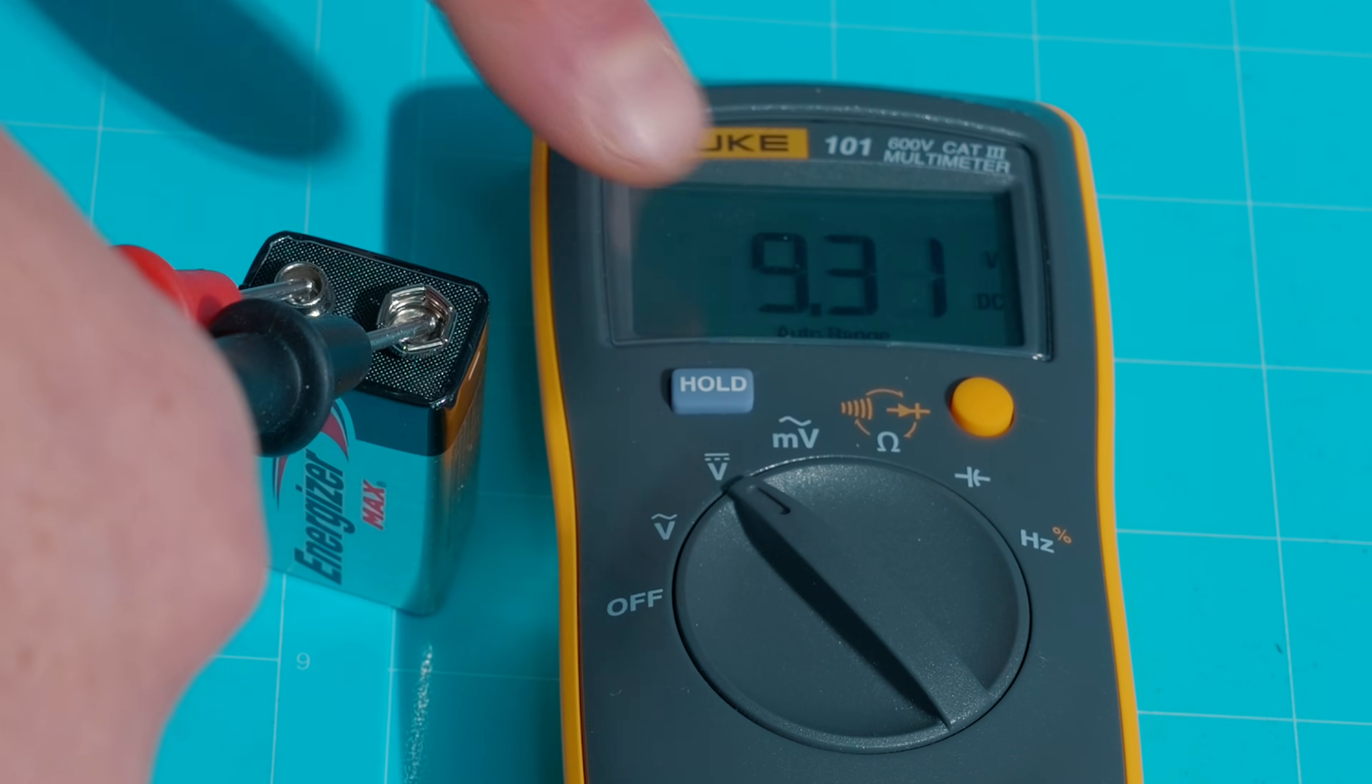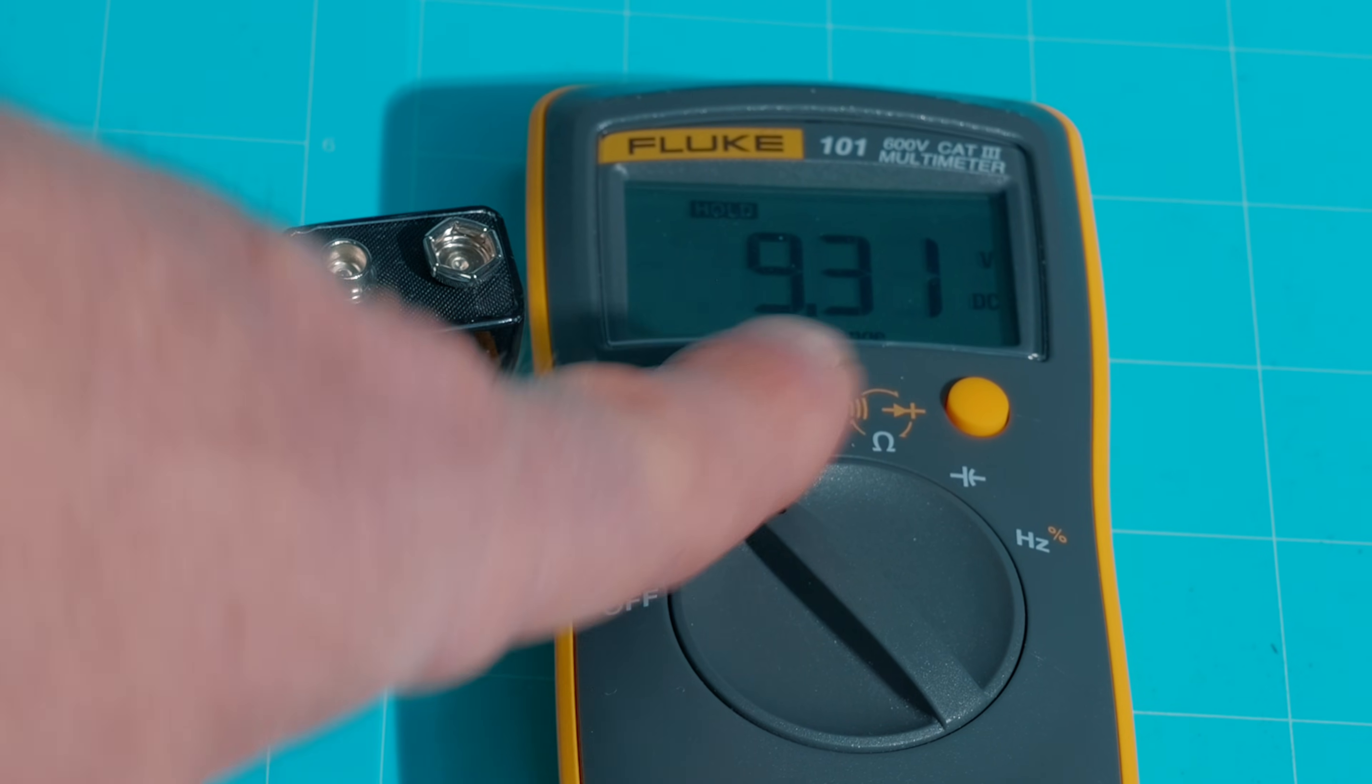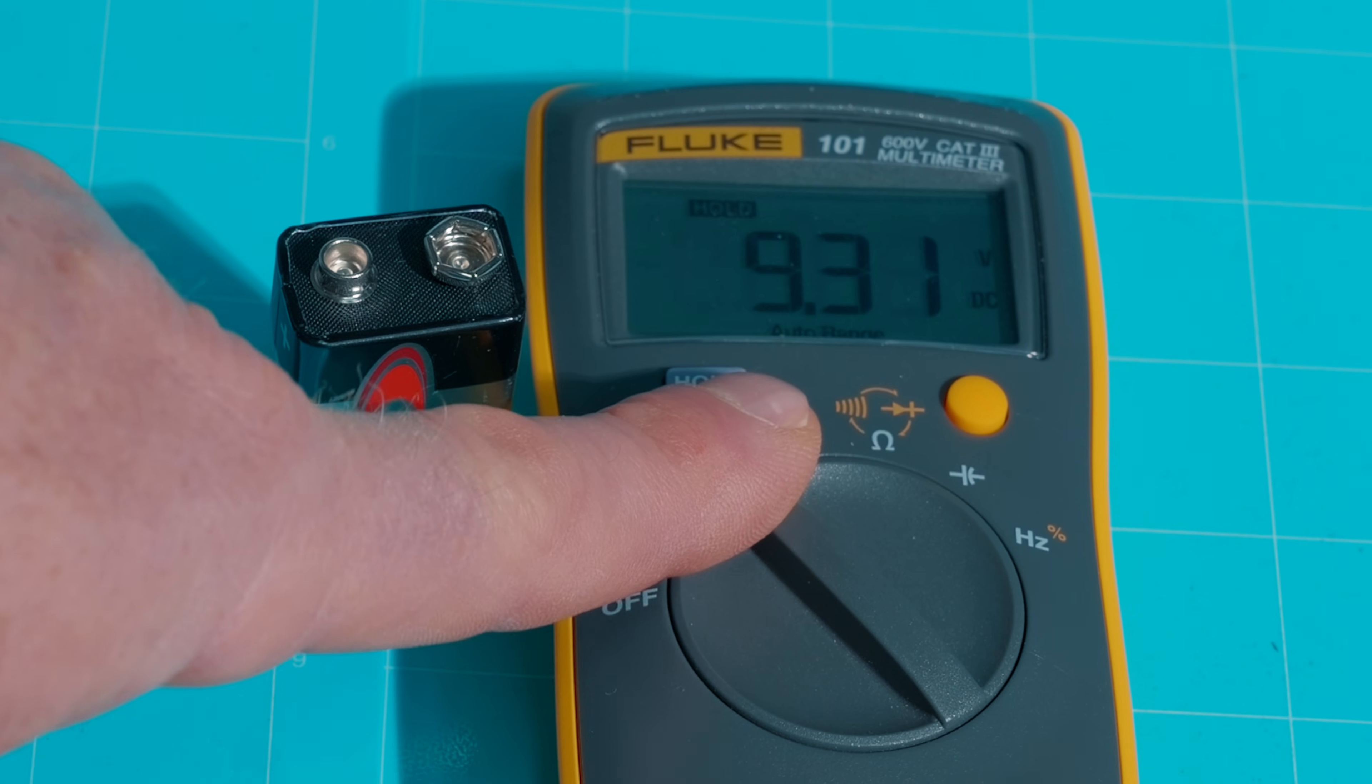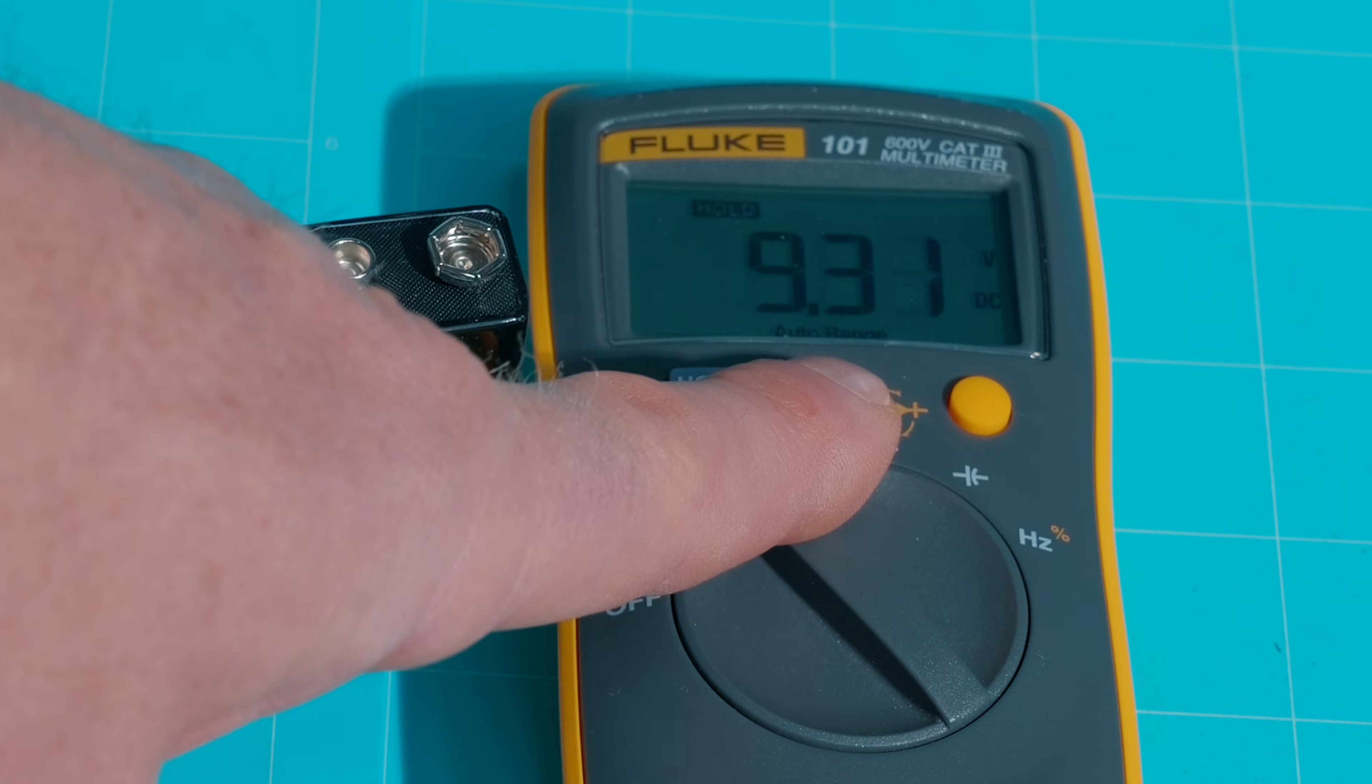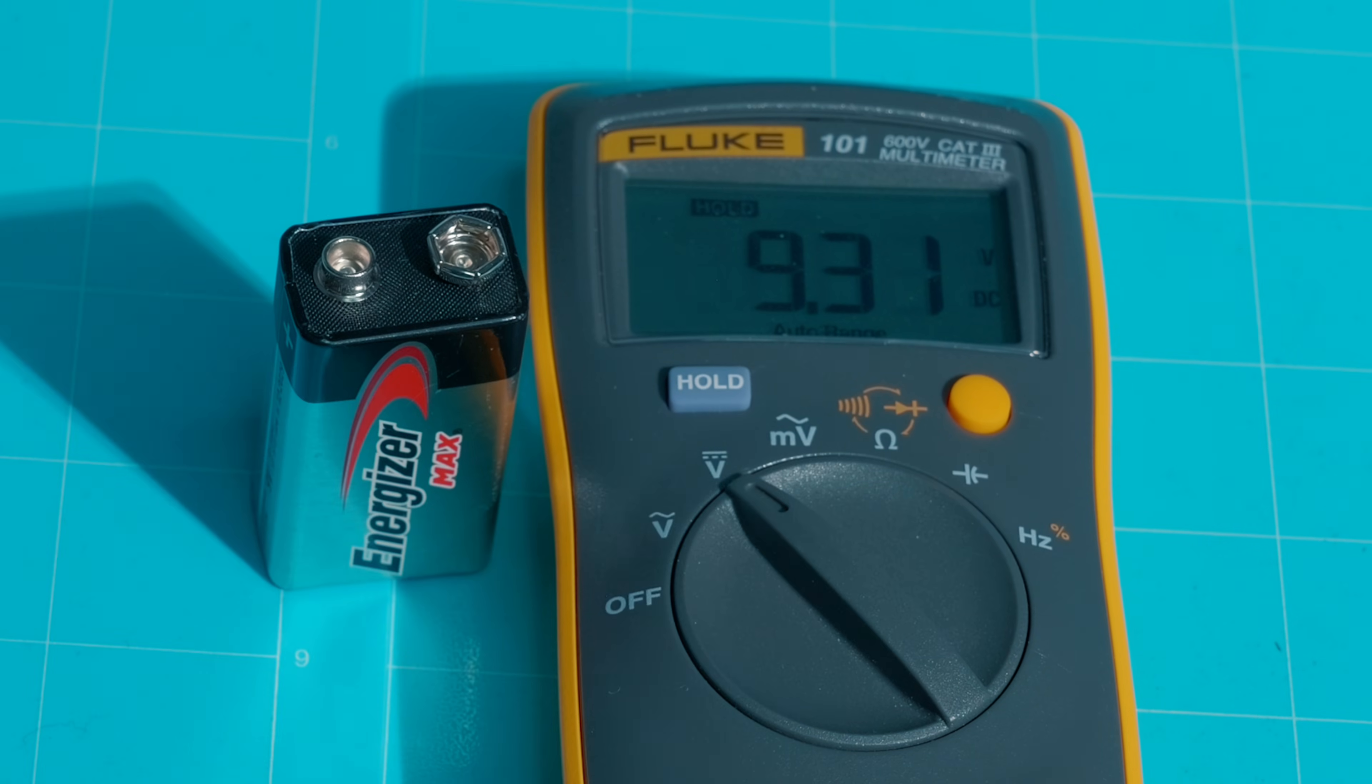Also, with this meter, it does have a hold button. So you can hit that blue hold button there. And it will, as you can see, hold your reading. So you don't have to write it down or remember. You can hit that hold button, and it will hold that last reading that you just took on the display. It works for any of these settings that you want to use it on.